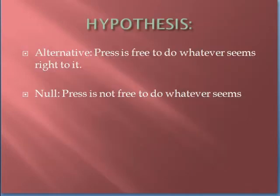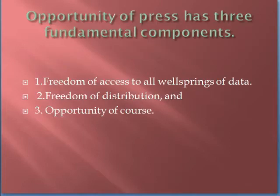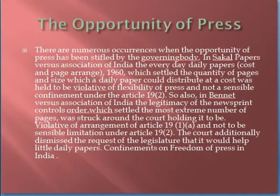What is the hypothesis? The alternative is that the press is free to do whatever seems right to it, versus the press is not free whether it seems right or not. The opportunity of press has basically three fundamental components: one, freedom of access to all sources of information; two, freedom of distribution; and three, freedom of opportunity — the right to express and disseminate.